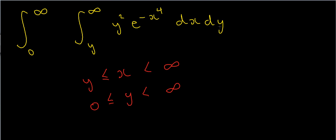I can write this as dy dx, but what really matters is what happens to the limits of integration. One way is to look at the inequalities, but I like to use a graph. I'm going to plot the lines corresponding to x equals y and x equals infinity — strictly speaking you can't plot x equals infinity, so I'll write x equals k for some constant k. It works the same whether you use a constant or infinity.